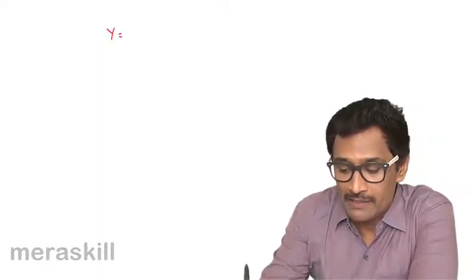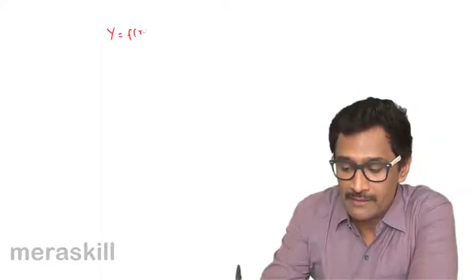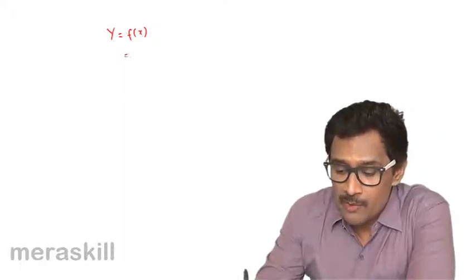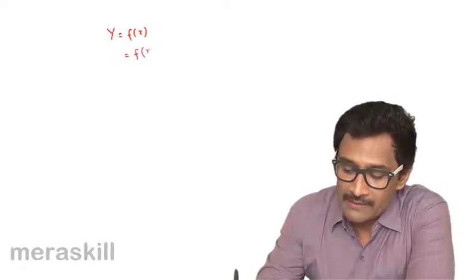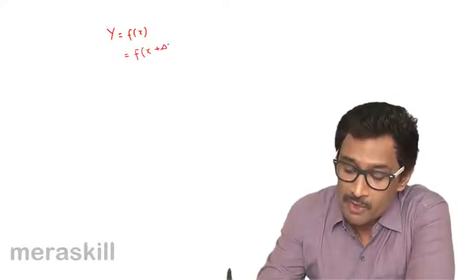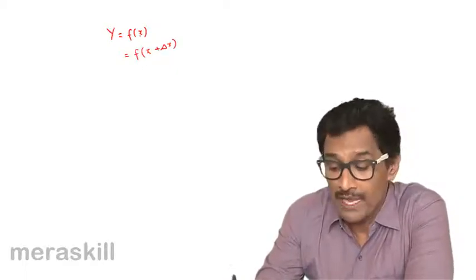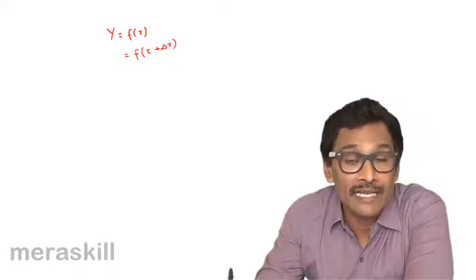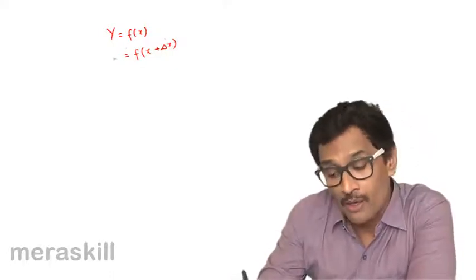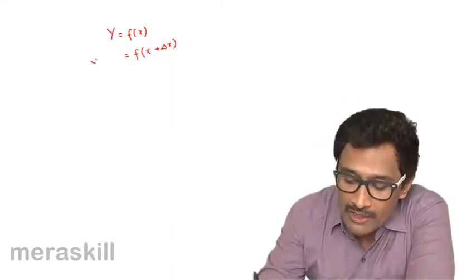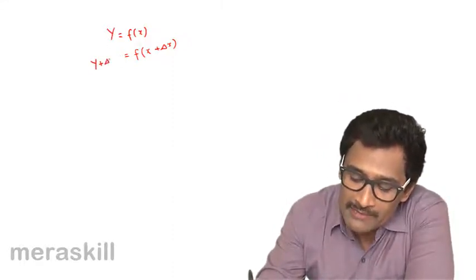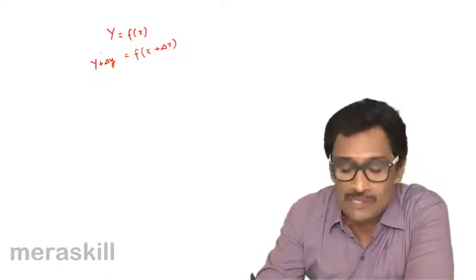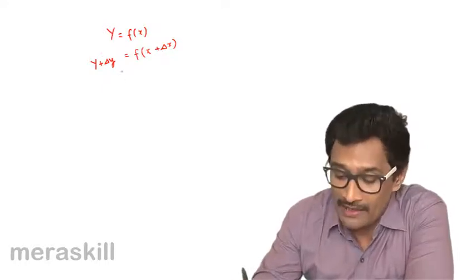Suppose you have a function y, which is nothing but f of x. Now suppose there is a small change in x — the smallest possible change, delta x. Suppose x was 3 and it becomes 3.001, so delta x is 0.001. Obviously, y would also change accordingly to y plus delta y.